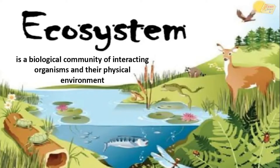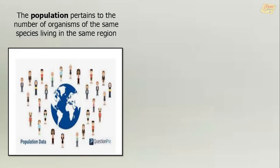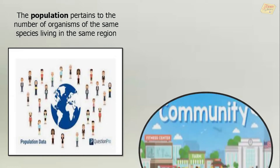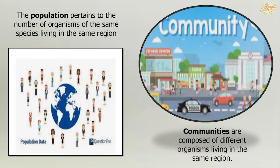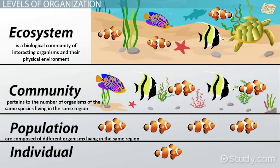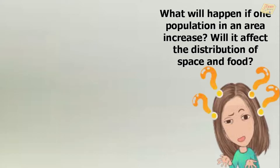An ecosystem is a biological community of interacting organisms and their physical environment. The population pertains to the number of organisms of the same species living in the same region. While communities are composed of different organisms living in the same region. This is what we call the levels of organization: ecosystem, community, population, and individual. What will happen if one population in an area increases?